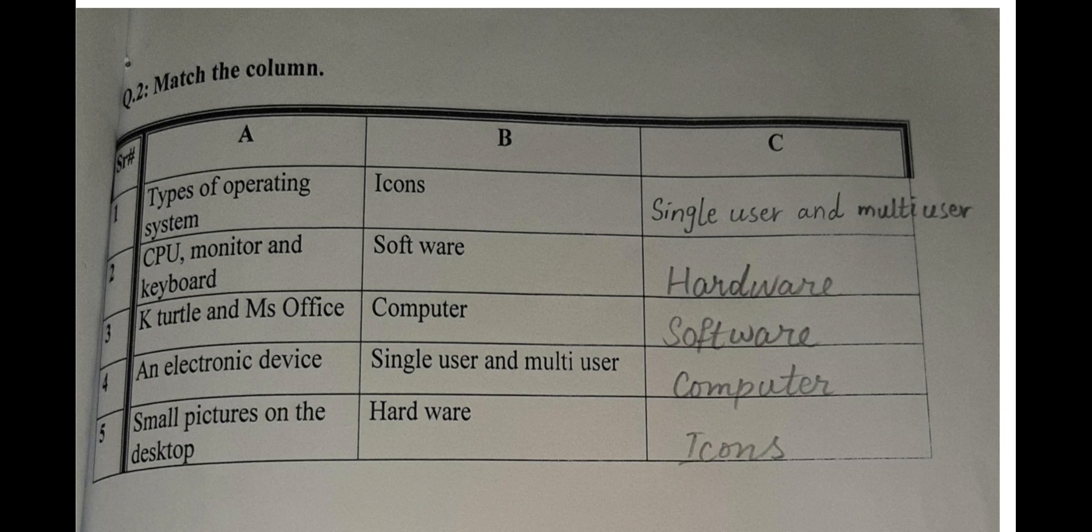Number one is types of operating system. You know how many types of operating systems there are? Yes, two types: single user and multi-user. In Column B you can see single user and multi-user.